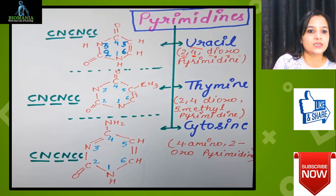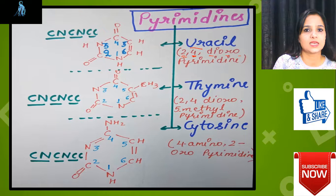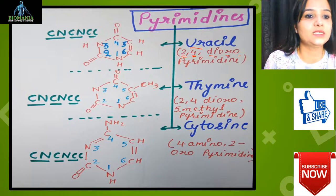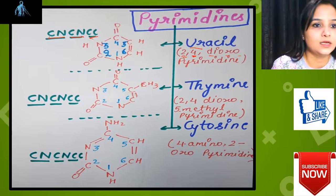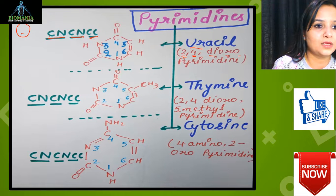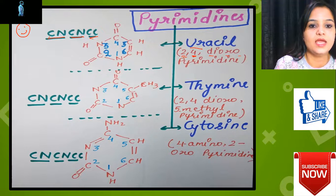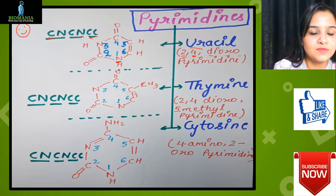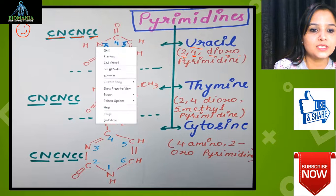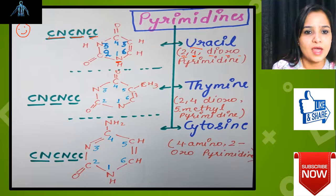One thing to remember here: you only need to learn six letters for the pyrimidine ring — C, N, C, N, and C, C. No need to learn N-N and C as in purines. In pyrimidines, numbering starts from the nitrogen atom, whereas in purines we started from a different position — that simple thing you have to remember.